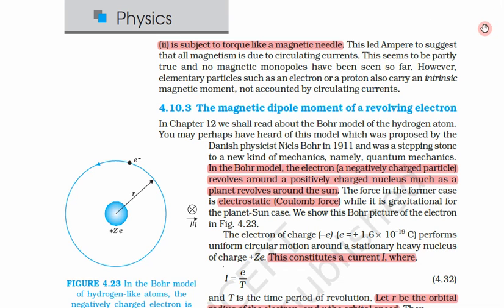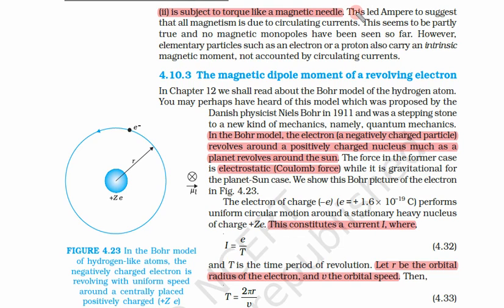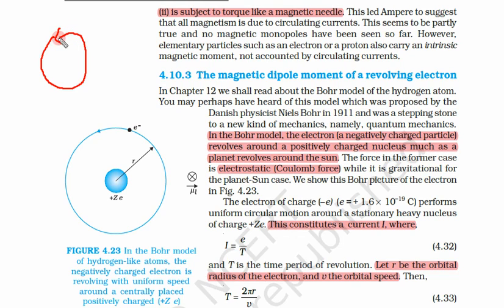This led scientist Ampere to suggest that all magnetism is due to circular currents. We now know that circular currents produce the magnetic field. If you look at a circular current loop, you can calculate the direction of the magnetic field using the right-hand rule. This seems to be partly true.